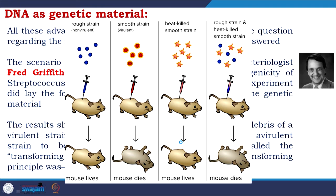In the experiment description: they chose a rough strain which is non-virulent and injected it into mice — the mouse survived. Then they took a smooth strain of Streptococcus which is virulent — when injected, the mouse died. Then they used heat-killed smooth strain — the mouse was not killed. But when they mixed the heat-killed smooth strain with the rough strain, that combination effectively killed the mouse. So they understood that something in the virulent strain transformed the non-virulent strain — because the non-virulent strain alone normally could not kill, but in combination with the heat-killed strain it could.